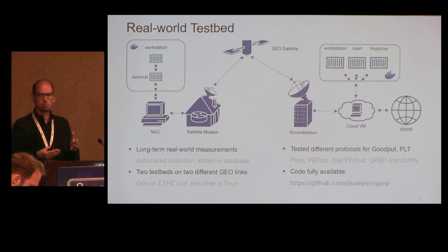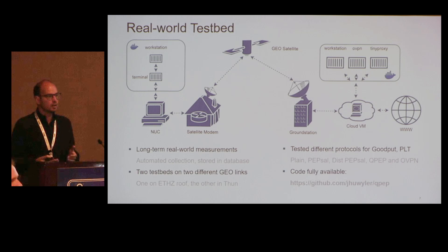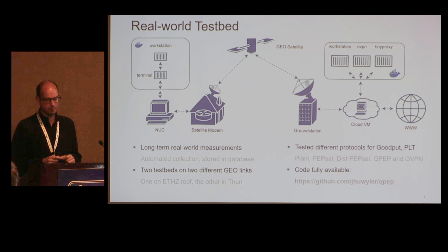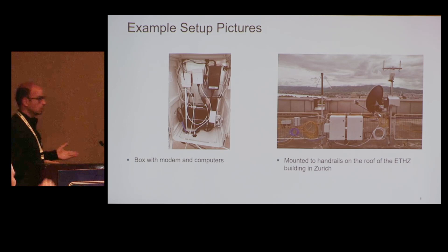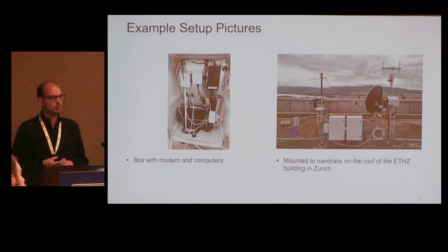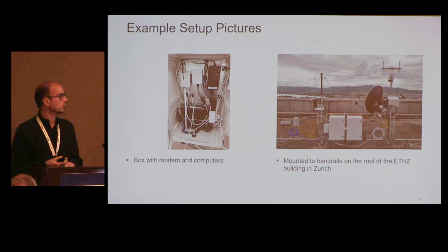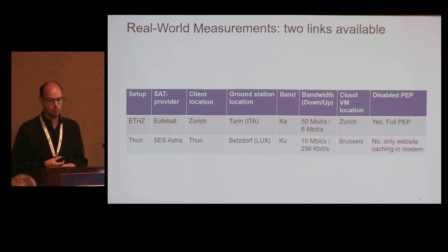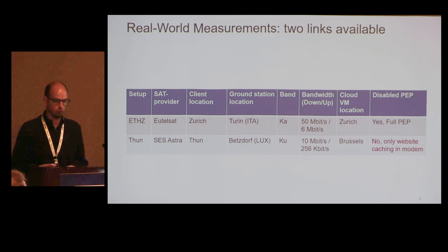We did long-term measurements, all automated, mostly to save money — running at night between midnight and 5 a.m. because bandwidth was free. That gave us five hours of free testing. Everything is available on GitHub. We had two testbeds: one on the ETH Zurich building with a weatherproof box — it rains a lot and it's cold in Switzerland. It was mounted on top of a very tall building with a partial view of Lake Zurich, using ViaSat as the satellite provider, with the ground station located in Italy on the Ka-band.